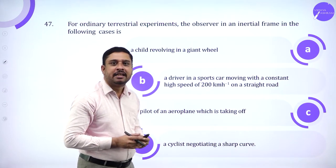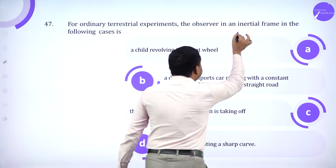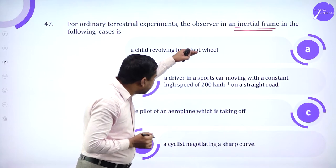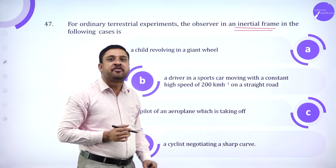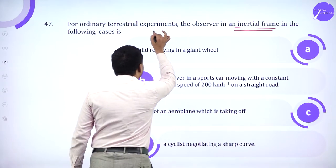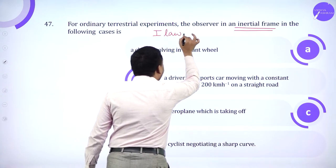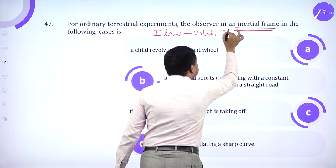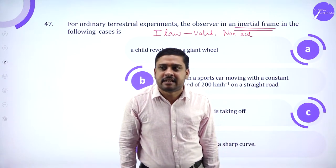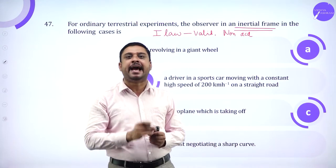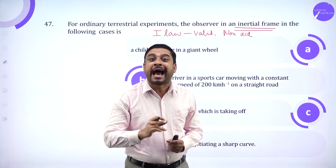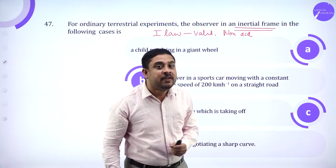For ordinary terrestrial experiments, the observer in an inertial frame in the following cases. Which of them describe inertial frame? What are the features of inertial frame? Newton's first law has to be valid and it has to be non-accelerated. For an inertial frame, Newton's first law is valid, acceleration is zero, and a body should move with constant speed.